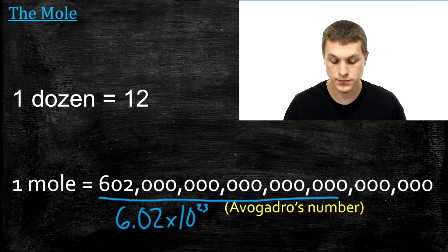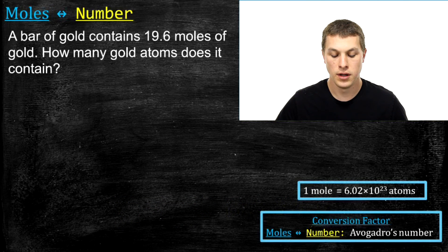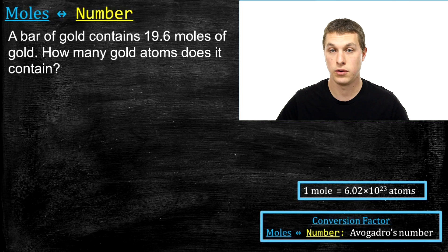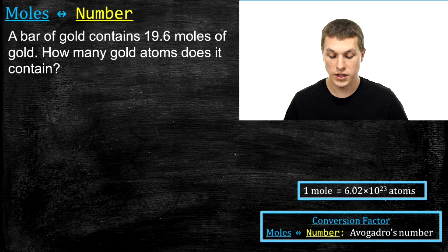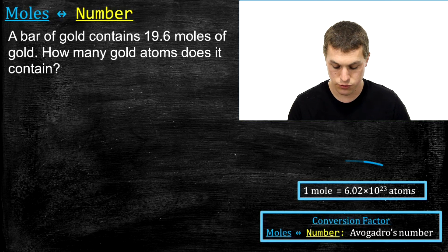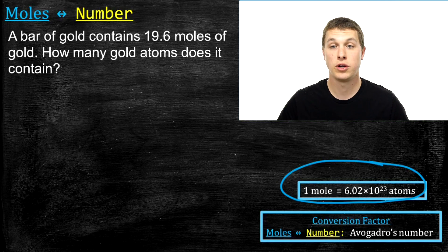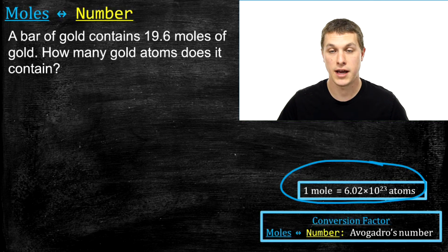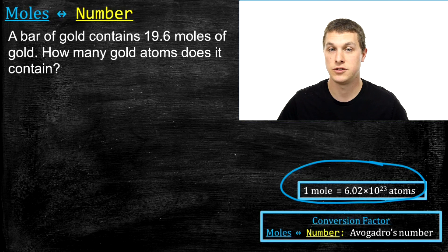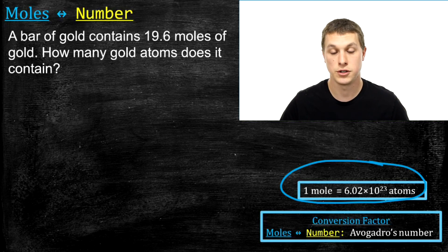What we're going to use Avogadro's number to do is go between moles of something and the number of something. Let's say a bar of gold contains 19.6 moles of gold. How many atoms are there? We can look at the equality: one mole equals 6.02 times 10 to the 23rd atoms, and that operates as a conversion factor. If you're not familiar with conversion factors, you may want to watch my video on unit conversion first.